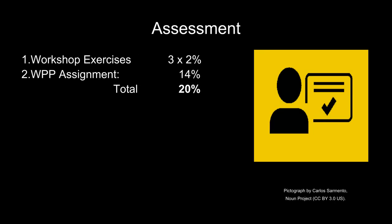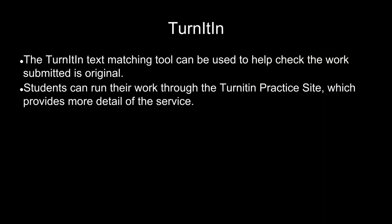The Work Portfolio Package assignment makes up 14% of your final grade, and the first three workshop exercises contribute 2% each, making a total of 20% of your course grade. The Turnitin Text Matching Tool can be used to help check that the work submitted is original. Students can run their work through the Turnitin Practice site, which provides more detail of the service.